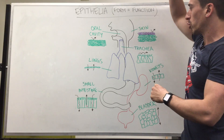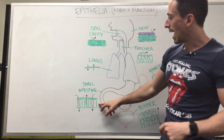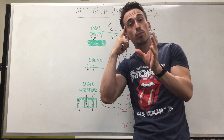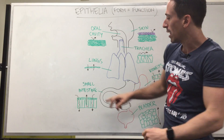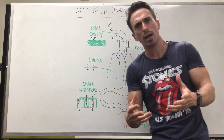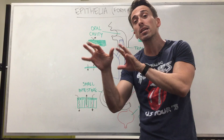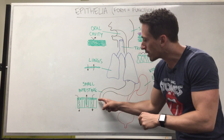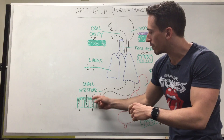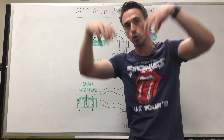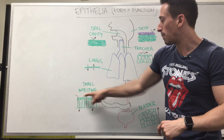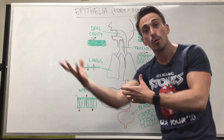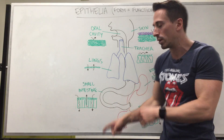Moving down to the small intestines — they have columnar epithelia as well. Straight away you should think: if it's columnar, it's going to be producing stuff. And it does — it produces mucus and many different types of enzymes. It also has little projections on top that look like cilia but are actually fingertip-like projections called villi and microvilli. These increase the surface area of the epithelia so more things can be absorbed. So the columnar epithelia with microvilli and villi is there to produce and secrete mucus and enzymes, and to absorb nutrients in the small intestines.